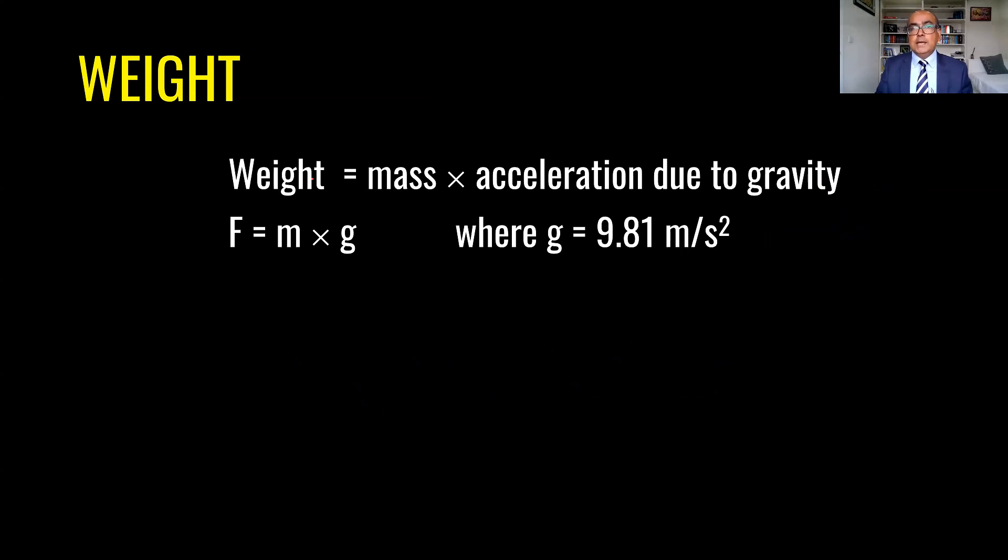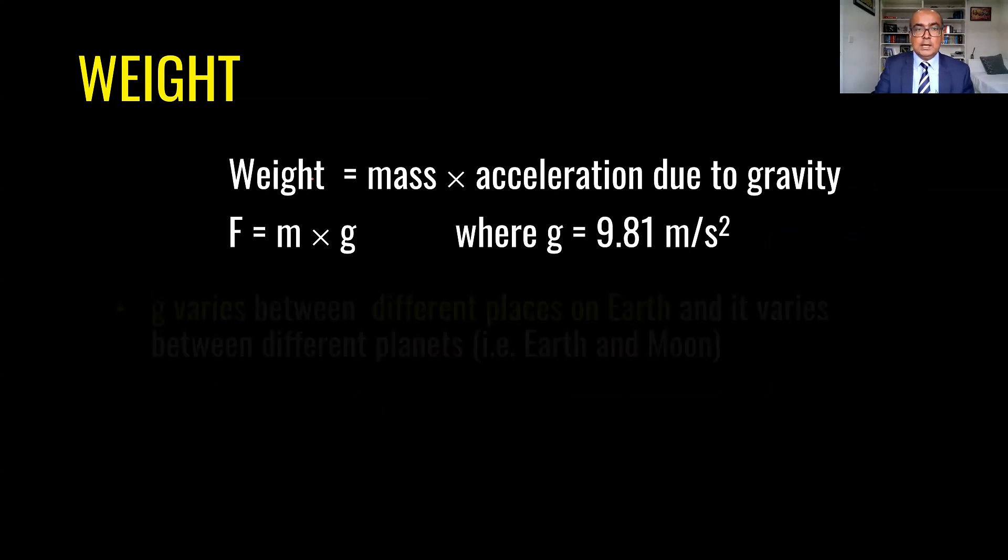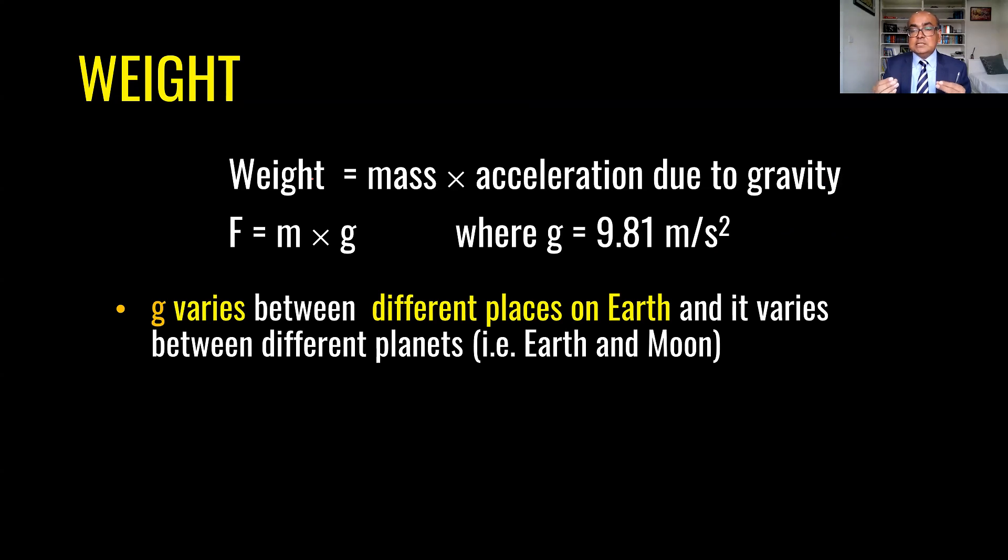What does it mean by weight? Weight is equal to mass into acceleration due to gravity. Gravity means that earth pulls everything towards its center. So F equals m times g where g is gravitational acceleration which equals 9.81 meter per second square. The key thing here is that gravitational acceleration is different on different parts of earth and it varies on different planets as well. For example, if a body weighs 100 kg it will be one sixth on moon. Mass on the other hand remains constant. The unit of weight is newton or kilonewton similar to force.